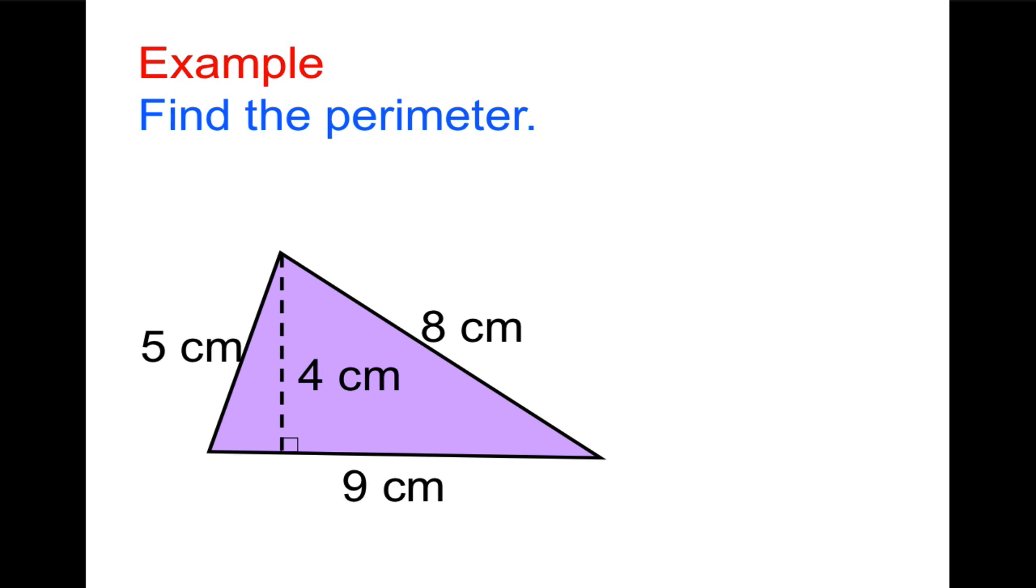Now, find the perimeter. Again, pause the video, figure it out, and then check back. Okay, perimeter is the distance around the outside of a figure. So, once again, there's a piece here that we are not going to count towards the perimeter, and that would be the height. The altitude is a dotted line, right? It's not one of the sides of the triangle. There are three sides to the triangle, and that's what we're going to add. We add five plus eight plus nine equals 22. 22 what? What unit? Perimeter is the distance around the outside. It's a straight line measure. It is centimeters.